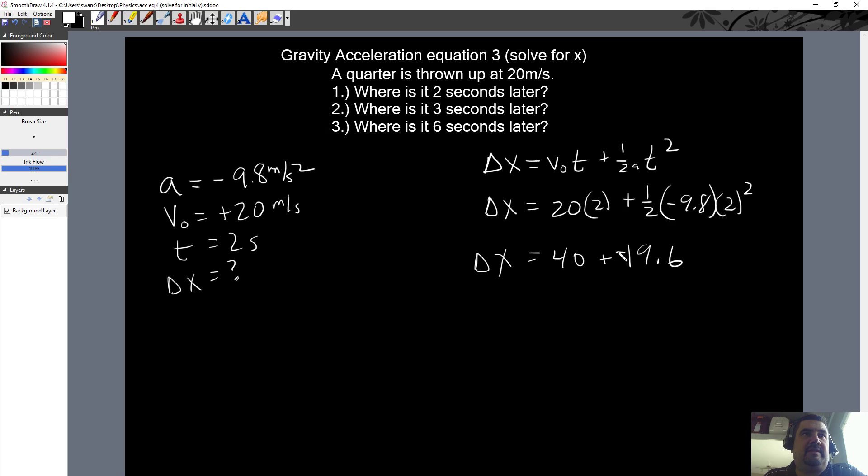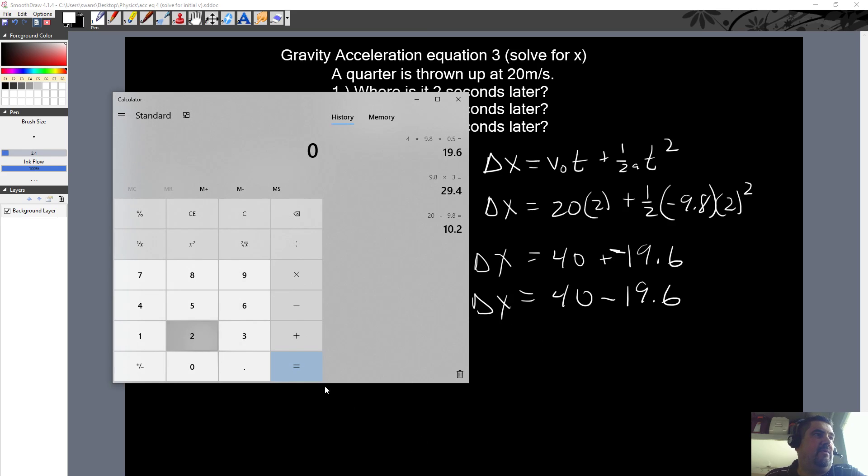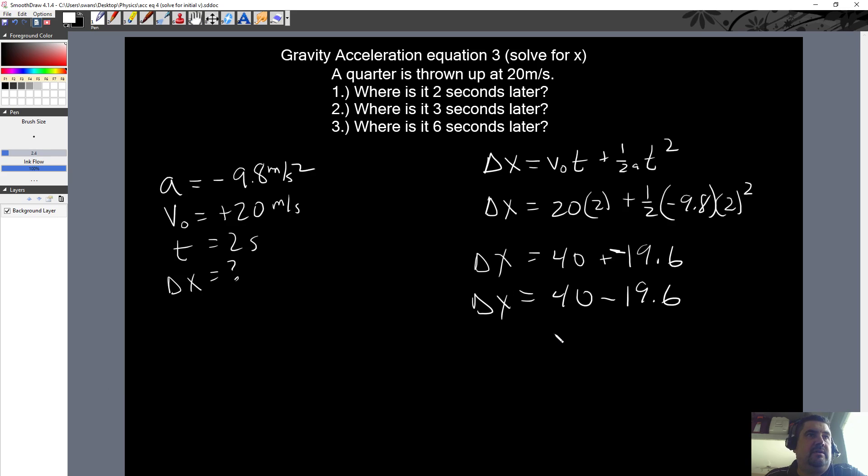But remember, that's negative because there's a negative there. So this whole chunk is negative. So it's technically 40 minus 19.6 is equal to delta x. And then, of course, if we take 40 and minus 19.6, we get 20.4. And this is positive delta x.